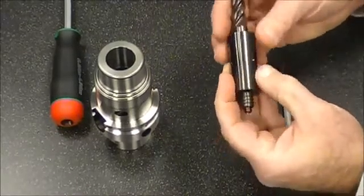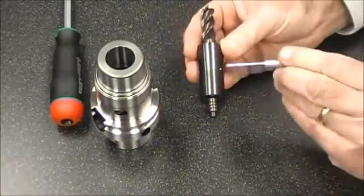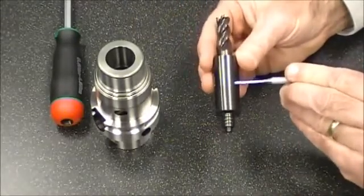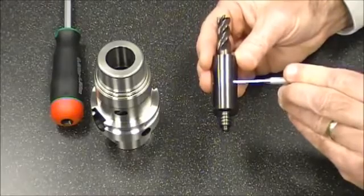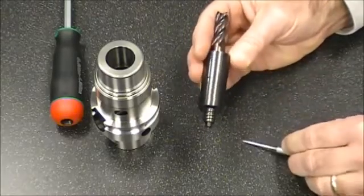Press it in as far as you can with your thumb, and then using the pin punch that comes with the kit, simply push it till it bottoms out. This is a counter board hole so it can't press all the way through.